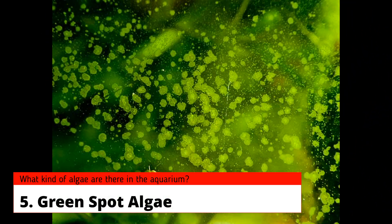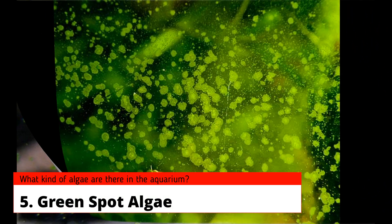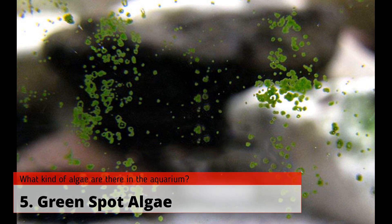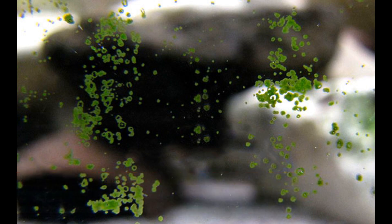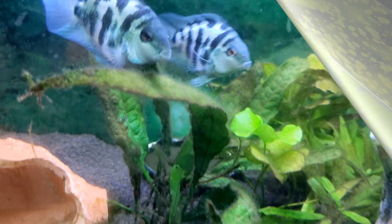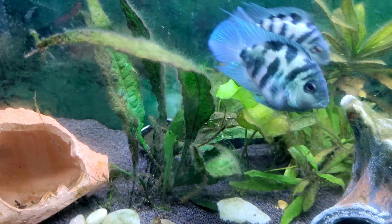Five: green spot algae. Green spot algae forms small circular green spots on the glass, leaves of plants, or other surfaces. They can be difficult to remove and are typically caused by an excess of light and nutrients.